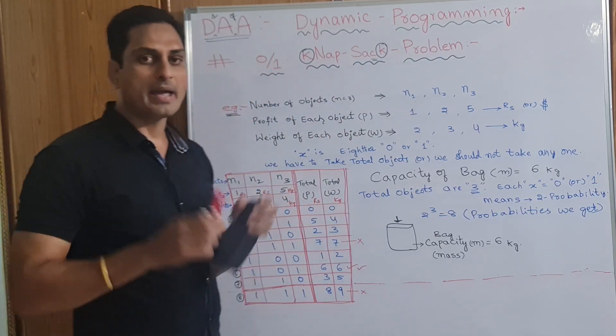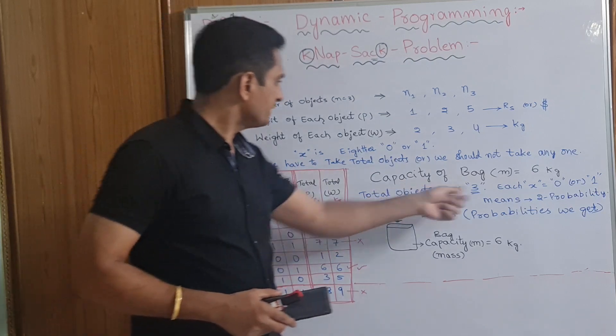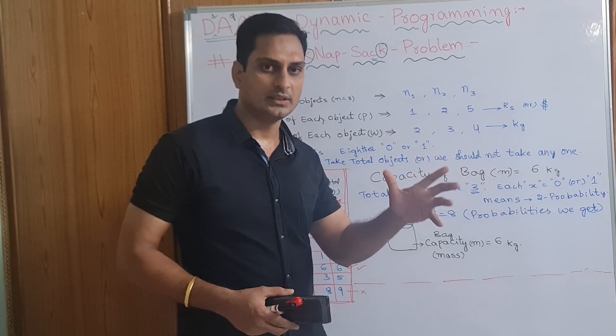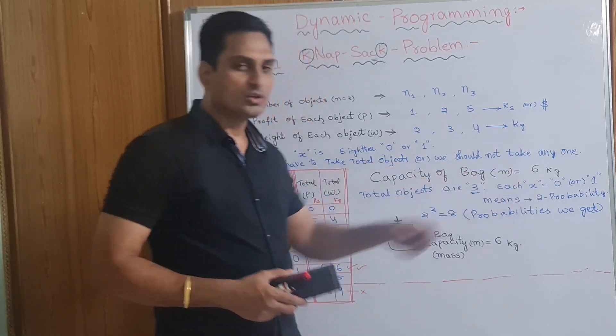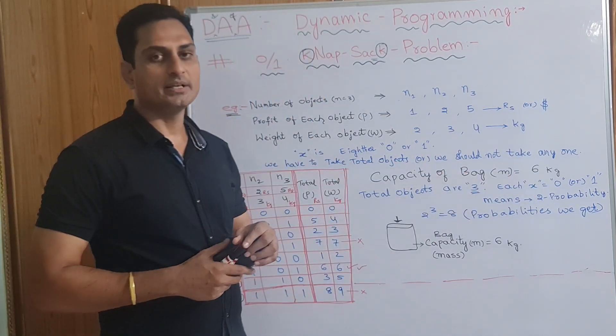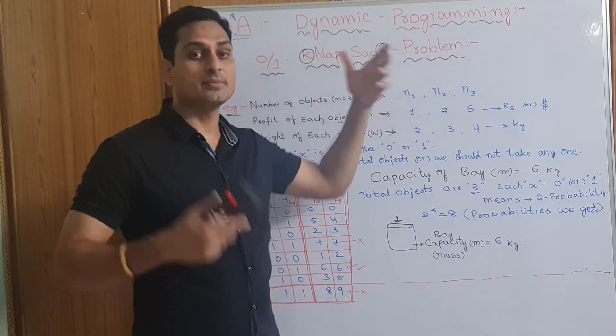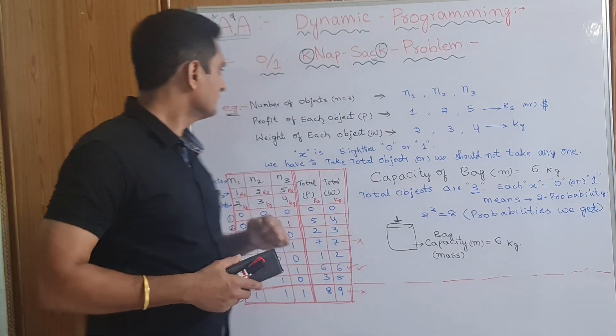Here, we have a bag capacity. For example, in this scenario, we have 6 kg weight of the bag, mass. That is a capacity. So, we need to fill the bag such a way that we need to get more profit. That is dynamic problem, maximization problem. More profit.